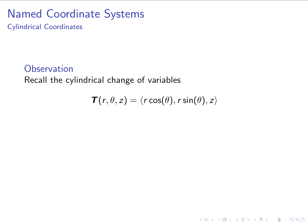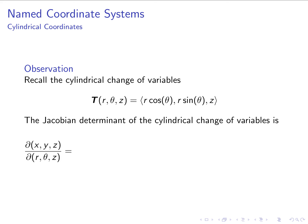Our other named coordinate systems for three-dimensional regions are cylindrical and spherical coordinates. The cylindrical change of variables is really the same as polar coordinates with the additional variable z, where z = z with no new relationship. To calculate the Jacobian determinant, since this change of variables goes from ℝ³ to ℝ³, we end up with a 3×3 determinant rather than a 2×2.